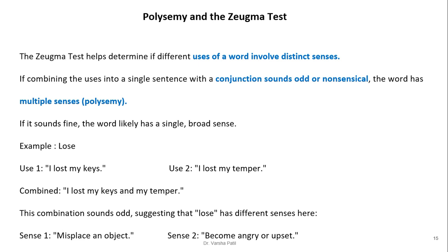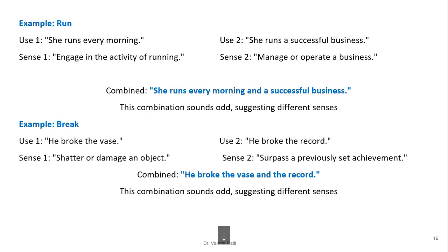Sense one of 'lost' relates to misplacing an object; sense two relates to becoming angry or upset. Another example: 'run' — 'she runs every morning' (engage in the activity of running) and 'she runs a successful business' (manage or operate a business). Combining them — 'she runs every morning and a successful business' — sounds odd, suggesting different senses. Similarly, 'he broke the vase' and 'he broke the record' are in different contexts, even though the word is the same.